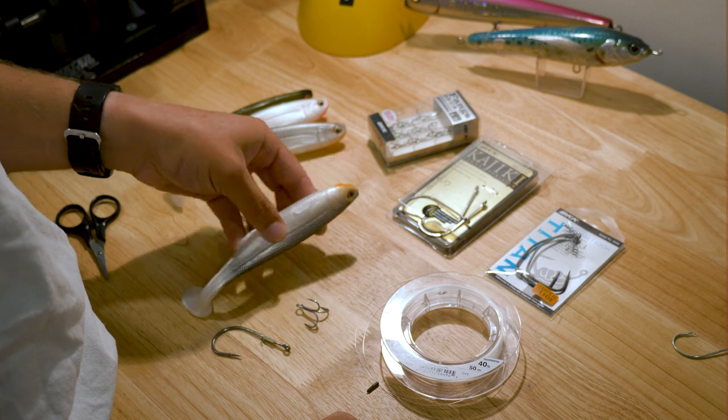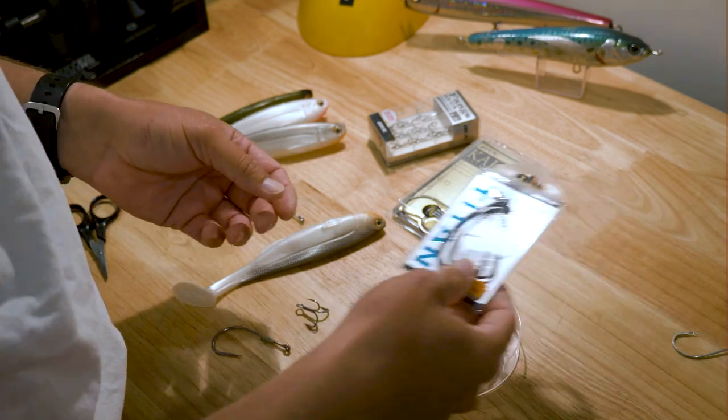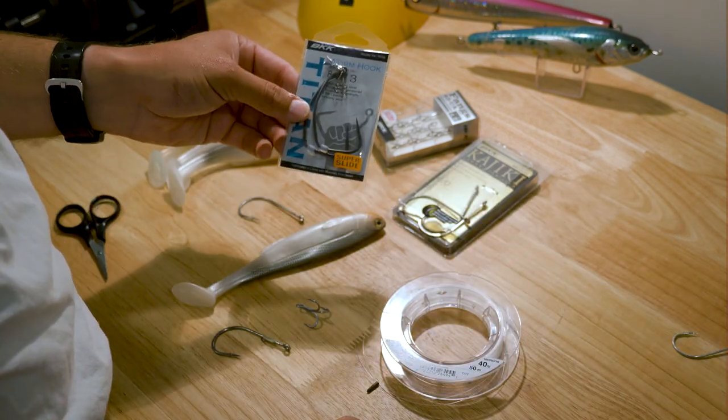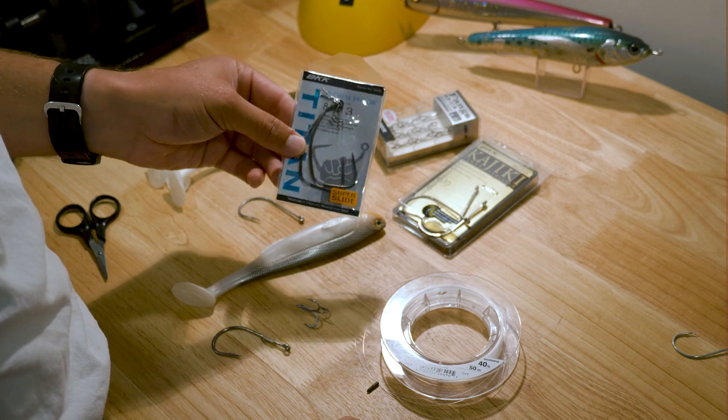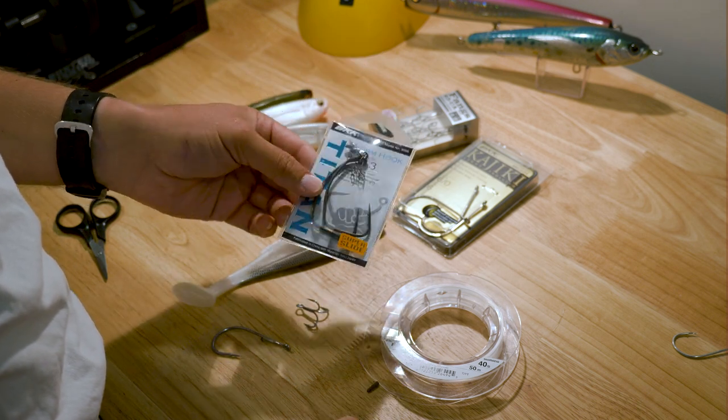It's a little bit different to what some people will do. Most people will rig big plastics, unweighted plastics on a worm hook, something like that. That's the BKK Titan.